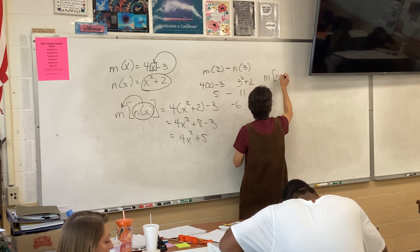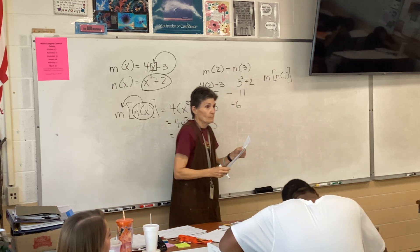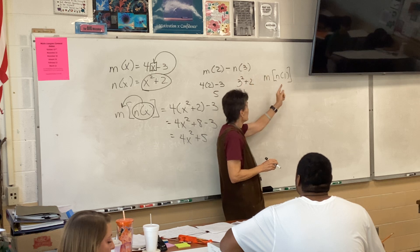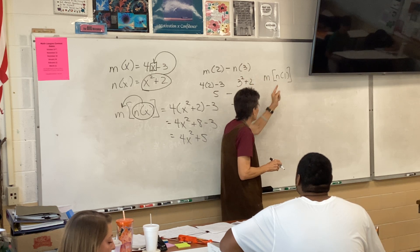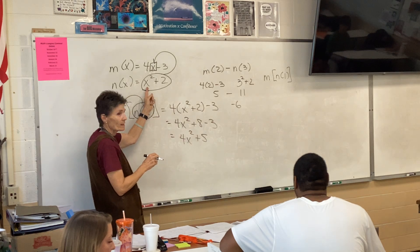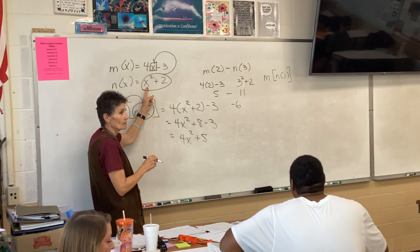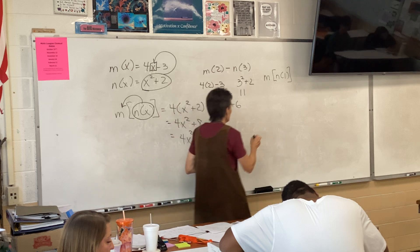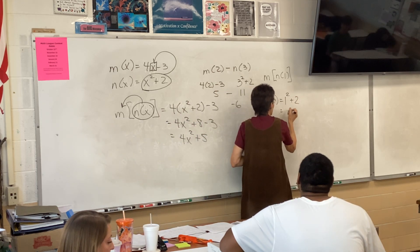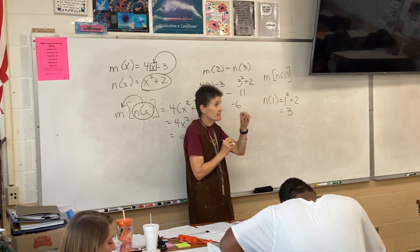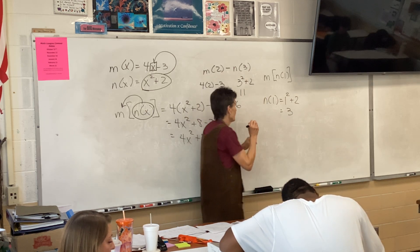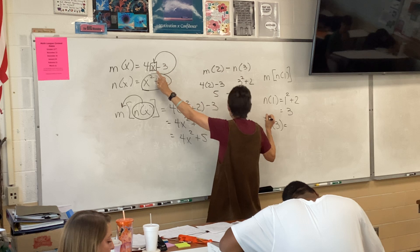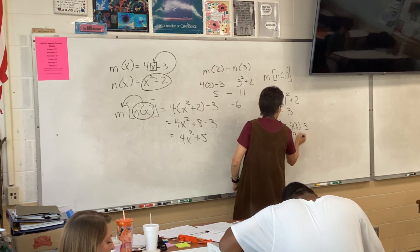What does this mean? Plug 1 into n — remember, we go backwards, starting with the letter closest to the number. So plug 1 into n: 1² + 2 = 3, so n(1) = 3. Then take that 3 and put it into m, and that's going to give me 9.